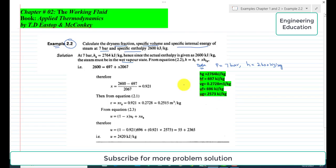If we compare the value of h and hg, in this case h is less than hg because h = 2600 kJ/kg, which is less than 2764 kJ/kg. This means the steam is in the wet region, or it is saturated steam.